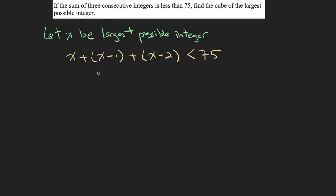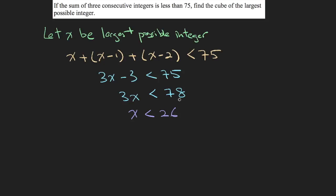We add the x terms to get 3x, then minus 1, minus 2, minus 3, which gives 3x minus 3 less than 75. So 3x is less than 78, and x is less than 26, because 78 divided by 3 is 26. We know the largest possible integer is less than 26, so x equals 25, since 25 is the largest possible number smaller than 26.